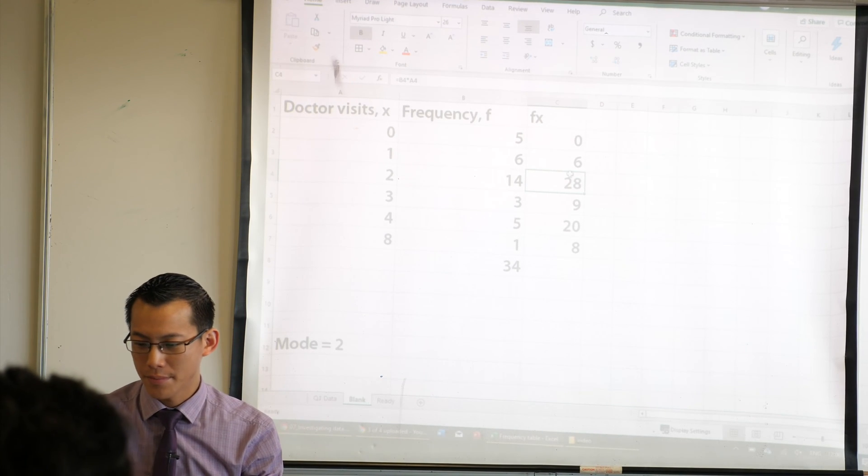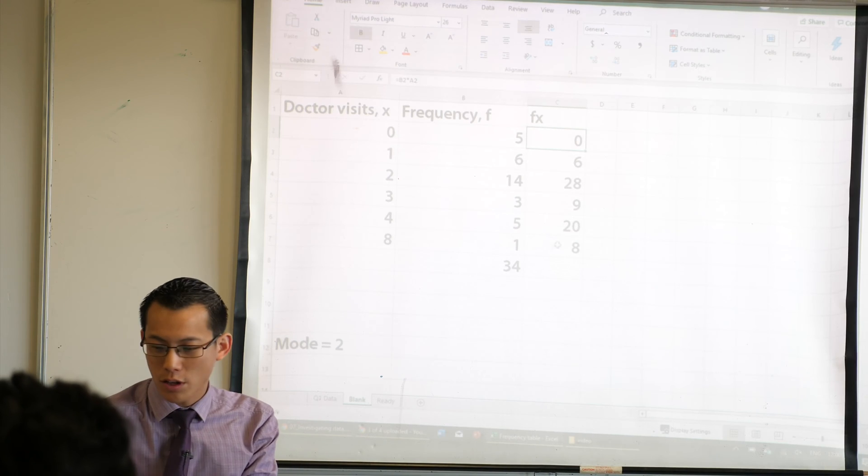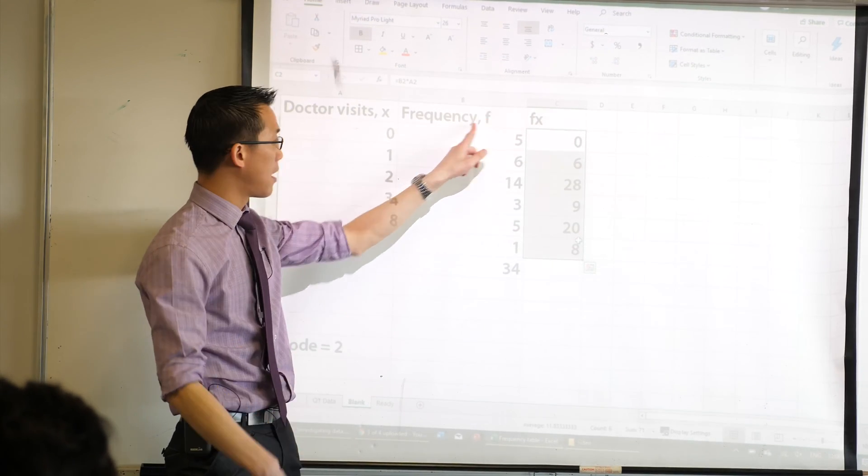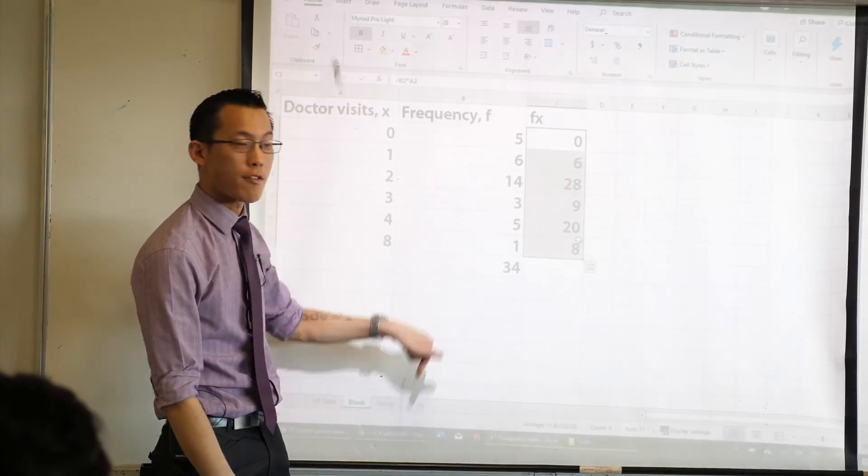Okay, we're doing well so far. So what does this fourth column represent? Well, it's the frequency multiplied by how many visits that number of people have, right?